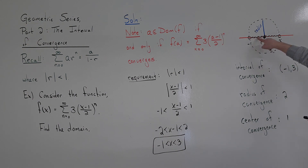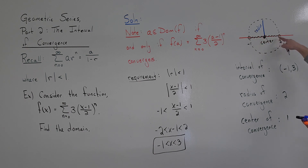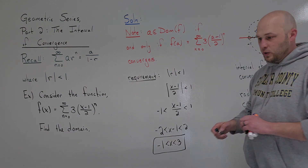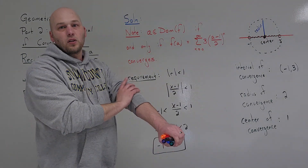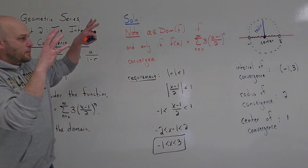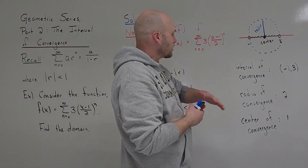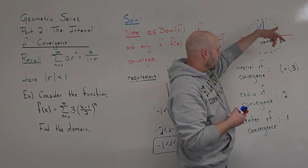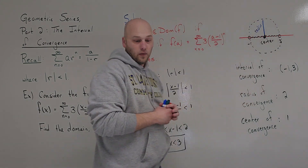So on the number line: minus 1, 0, 1, 2, 3. The radius is 2 — that's a length. The center is the center of this interval at x = 1. When you take a course in complex analysis, you'll see why we embedded that circle there. But for us, the center is the middle of the interval and the radius is half the length of the interval.